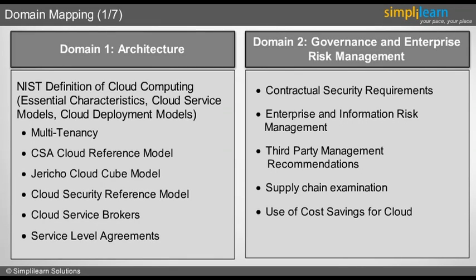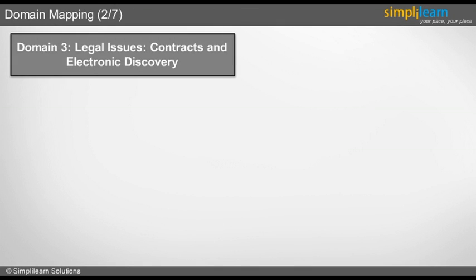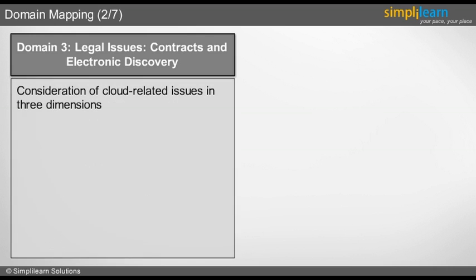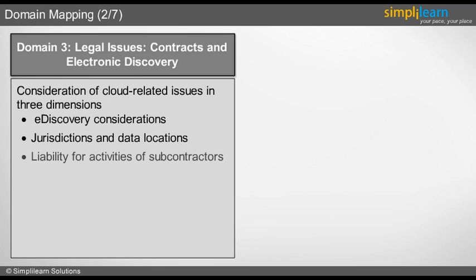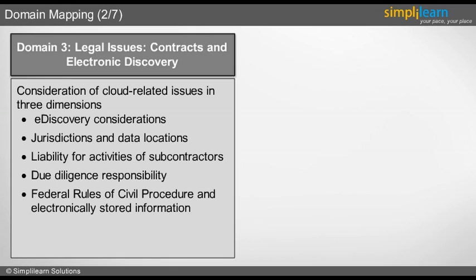Domain 3: Legal Issues, Contracts and Electronic Discovery. In this domain we will look into several considerations of cloud-related issues in three dimensions: e-discovery considerations, jurisdictions and data locations, liability for activities of subcontractors and due diligence responsibility. Also covered are Federal Rules of Civil Procedure and electronically stored information, metadata, and litigation hold.